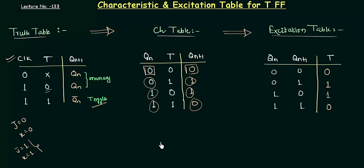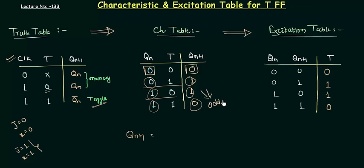Now we need to find out the expression for the characteristic table, that is Qn plus 1. You can see that Qn plus 1 is high only when there is an odd number of ones — a single one gives a high output, even ones give a low output. This is an odd-ones detector, which is simply an XOR combination. So Qn plus 1 equals Qn XOR T.